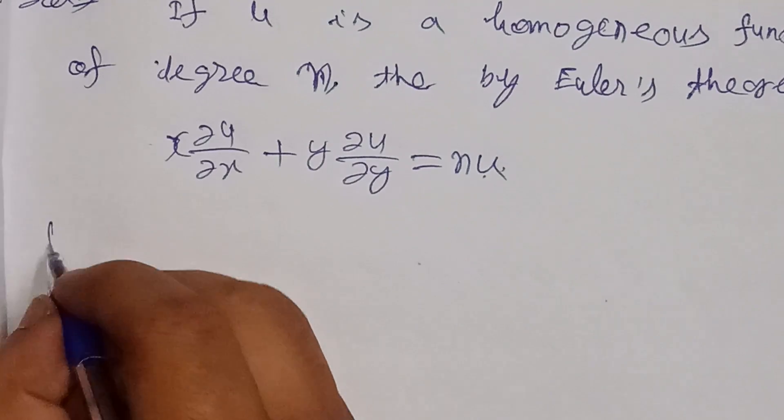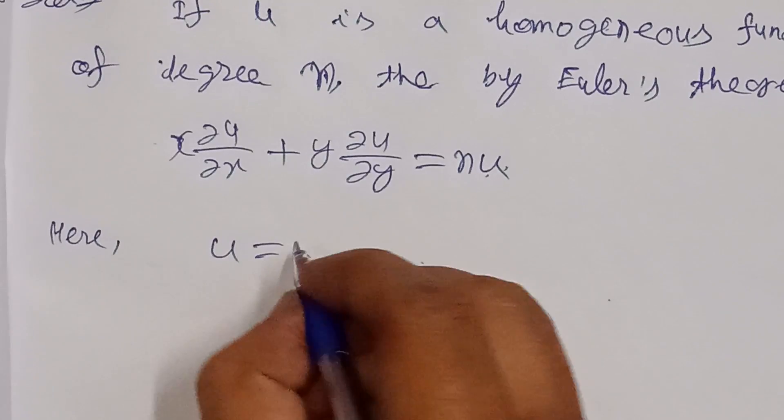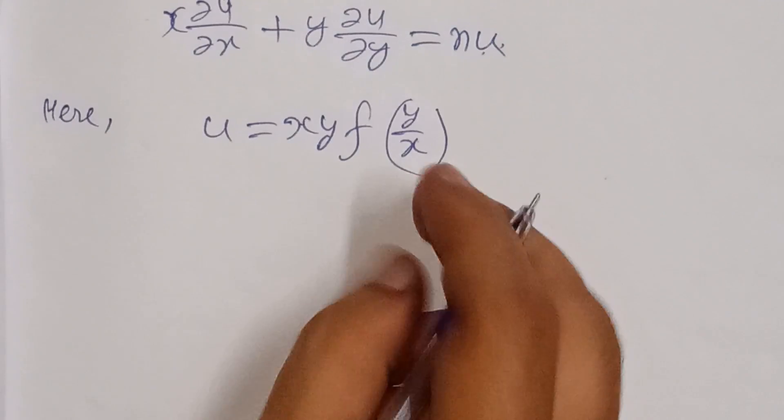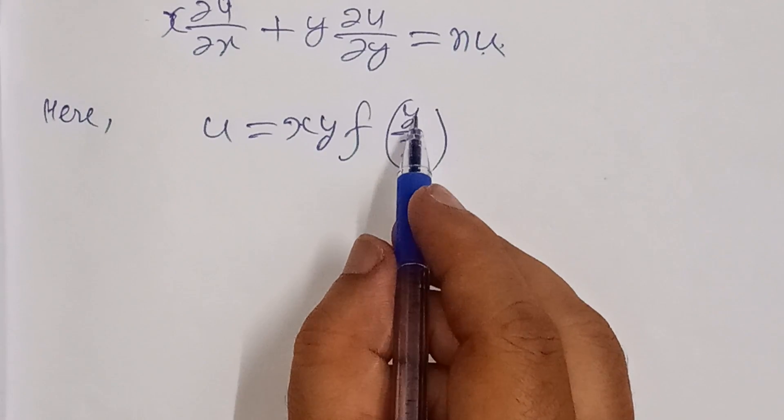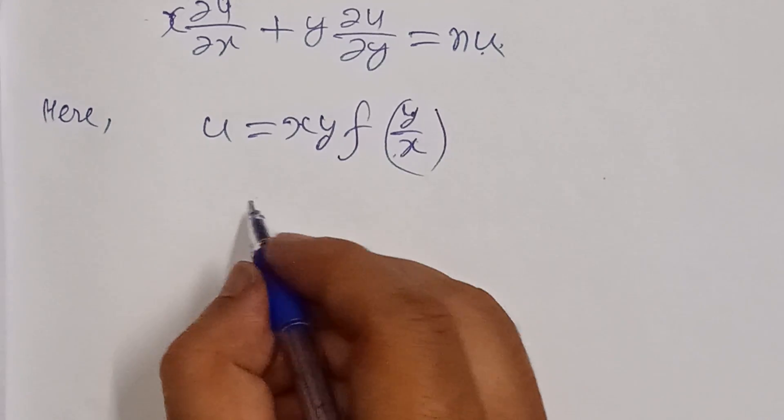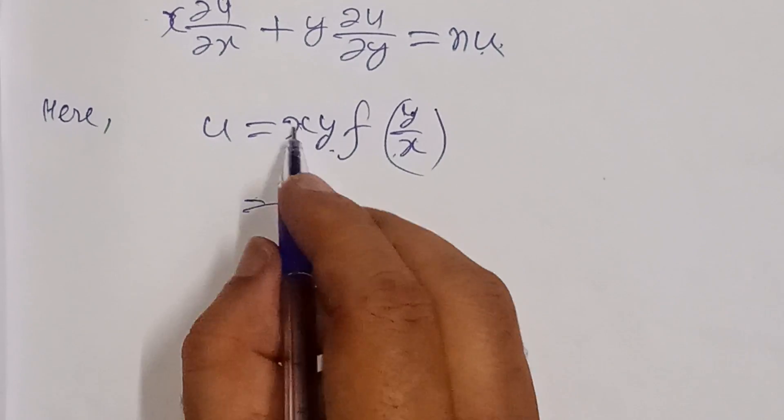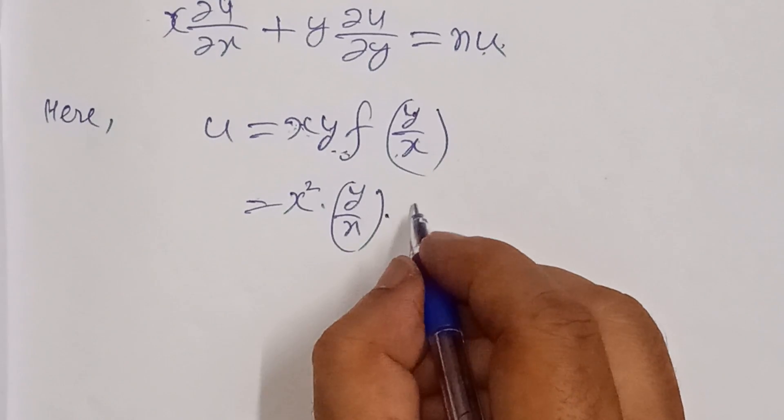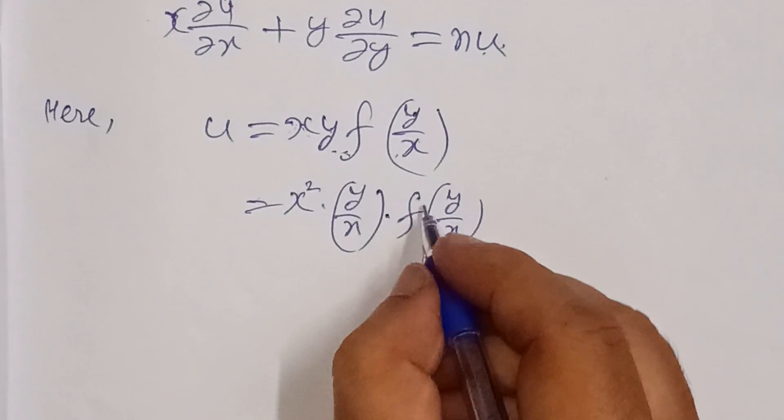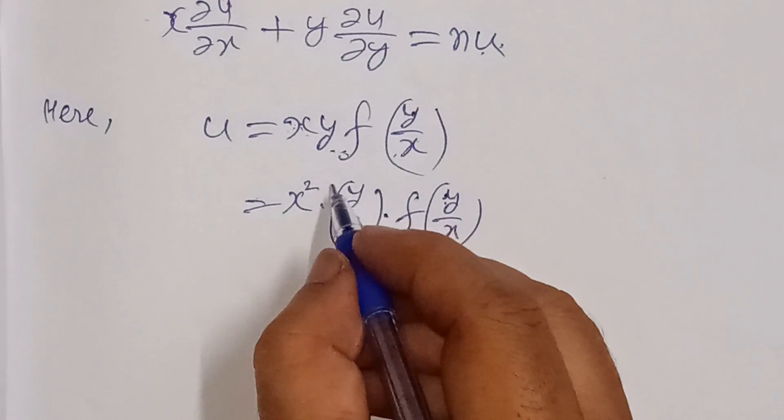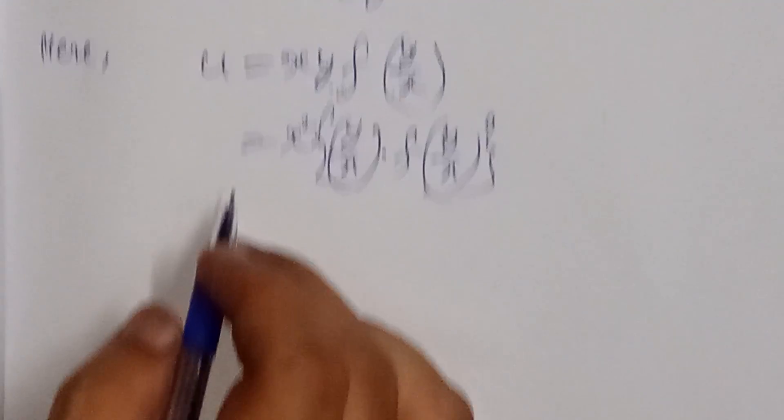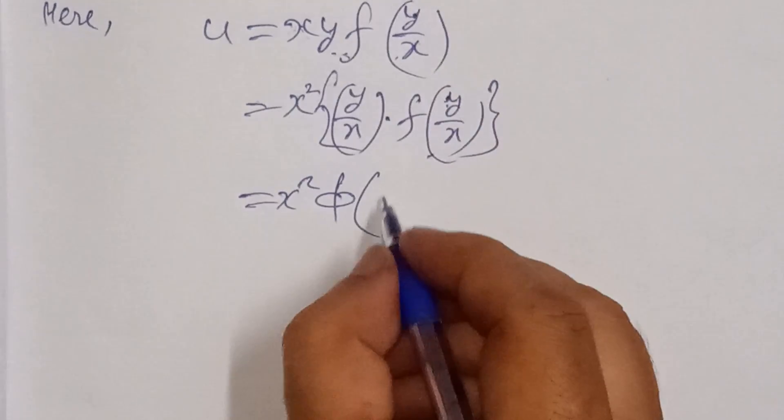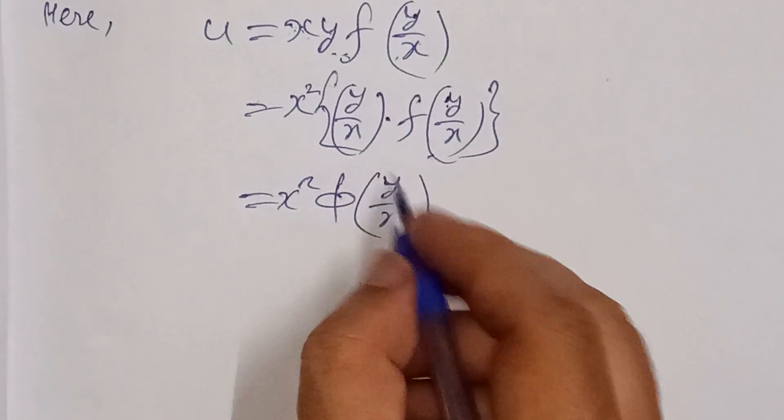But we need to verify our u function is homogeneous. We need to make this function, so it is a new function phi. This is the y upon x function, so we look at y upon x.